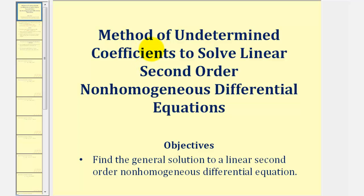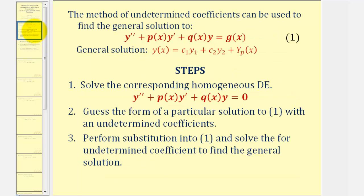Welcome to an example on how to use the method of undetermined coefficients to solve a linear, second-order, non-homogeneous differential equation. We're talking about solving a differential equation that fits this form here. Notice how it's not equal to zero — it's equal to a function of x, which is why it's a non-homogeneous differential equation.